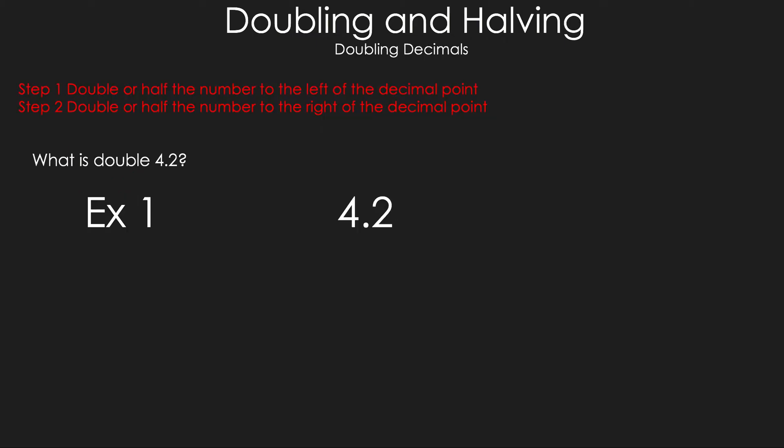Let's take a look at the steps. Step one: double or halve the number to the left of the decimal point. Step two: double or halve the number to the right of the decimal point.